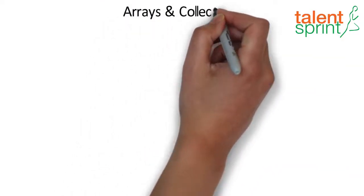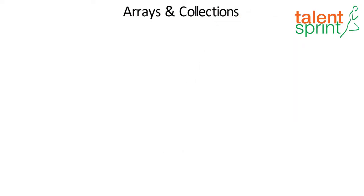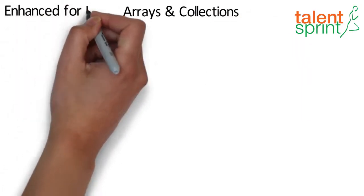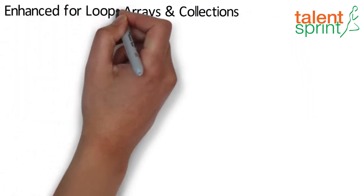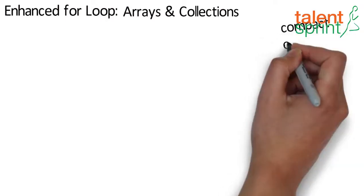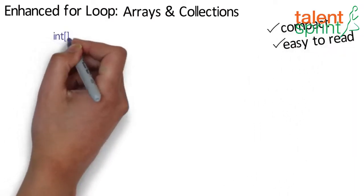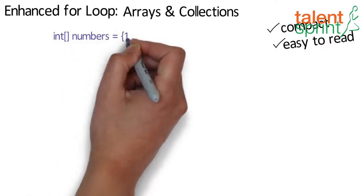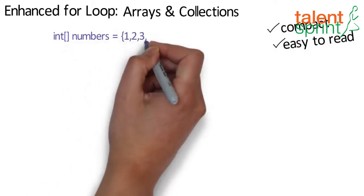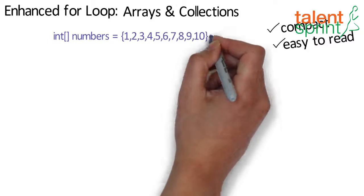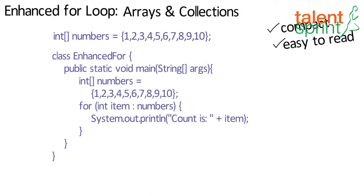The for statement also has another form designed for iteration through arrays and collections. This form is sometimes referred to as the enhanced for loop and can be used to make your loops more compact and easy to read. To demonstrate, consider the following array which holds the numbers 1 through 10 — we can use the enhanced for loop to loop through the array.